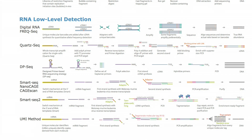SmartSeq, on the other hand, and digital RNA are the most commonly used methods to study RNA from single cells. SmartSeq really promotes full-length transcripts because it has a 5' anchor that makes sure that the transcripts are full-length. That's one of the reasons why SmartSeq is quite popular.